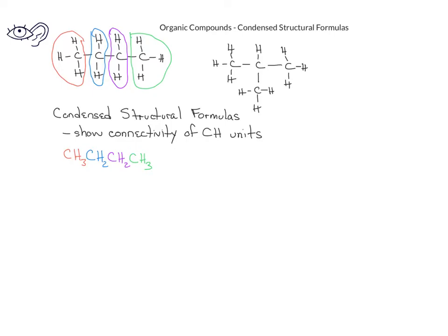We could do a similar condensed structural formula for the branched-chain C4H10 structural isomer. The difference is that the second carbon in the line of three is a CH, and we draw a line down to a separate CH3 unit. Drawing condensed structural formulas allows us to indicate the connectivity of the CH units much more quickly than a structural formula that shows all of the carbon and hydrogen bonds.